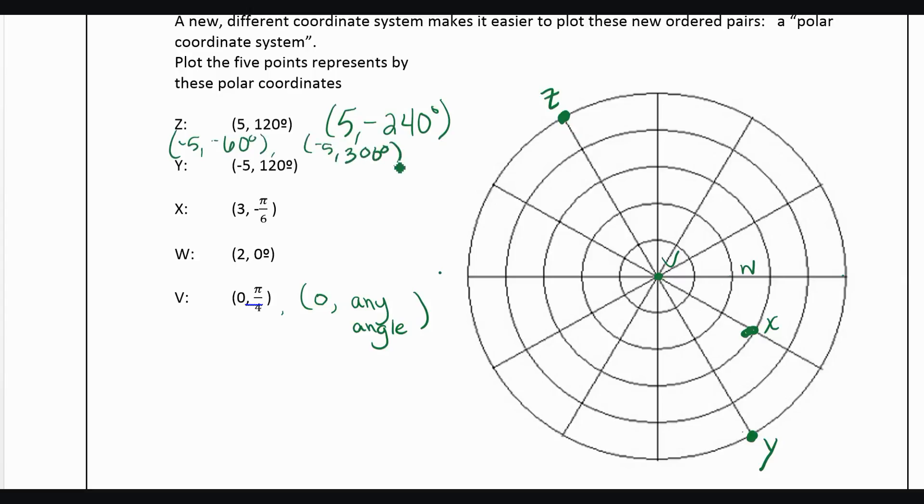Or we could even say negative 5 and then if we went 300 degrees, we would end up there. So there's lots of different ways to write the same point. And if we went out 5 and then any angle that was coterminal to 120 would also land in that spot.